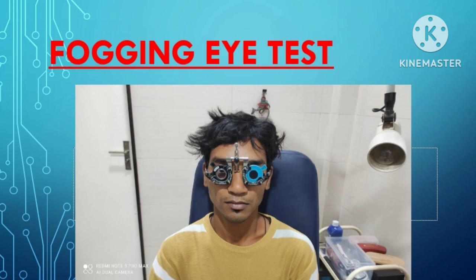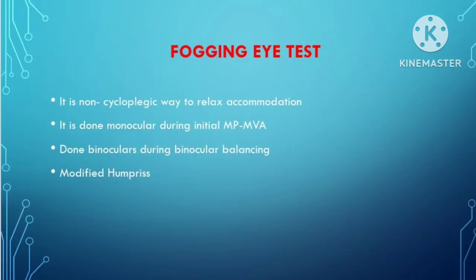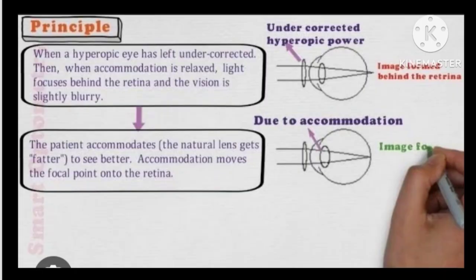The fogging eye test is a non-cycloplegic way to relax accommodation. It is done monocularly during initial MPMVA — that is, Maximum Plus with Maximum Visual Acuity — and done binocularly during binocular balancing, which is the Modified Humphriss method.